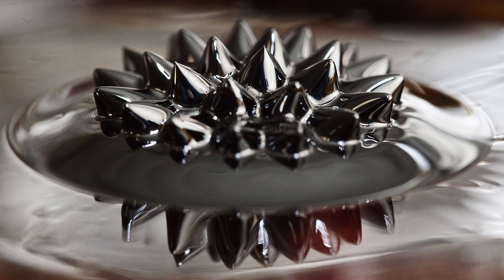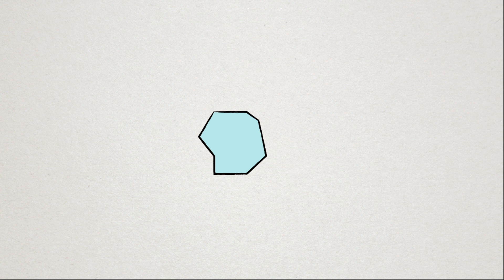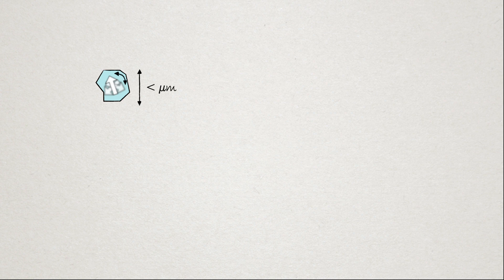Another form of magnetism that is actively investigated in science today is exotic forms of ferromagnetism. One such exotic form of ferromagnetism is when ferromagnetic particles get down to the size of around one micron or smaller.